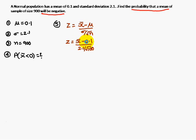The x̄ value we don't know, but μ is 0.1, standard deviation is 2.1, and n is 900. If you simplify this, you're going to get z equals x̄ minus 0.1 by 0.07.